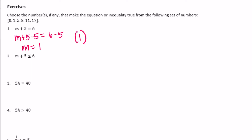Exercise 2: m plus 5 is less than or equal to 6. Solving: m is less than or equal to 6 minus 5, which is 1. So anything less than or equal to 1 from our set works: 0 and 1.